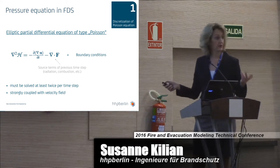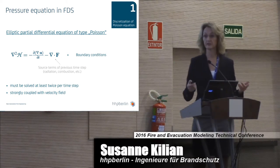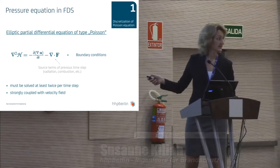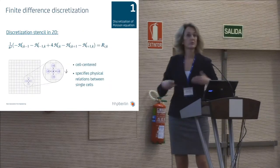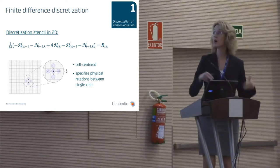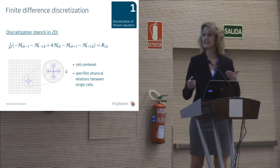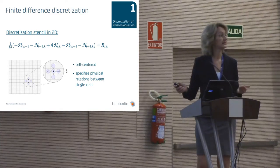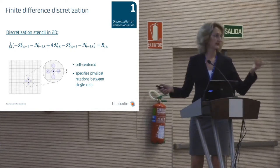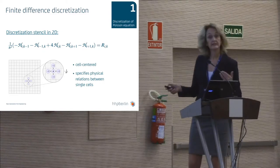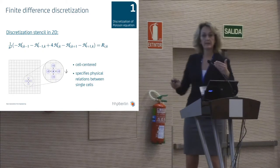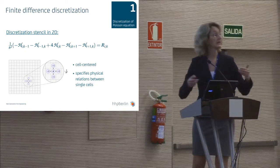Here you see a big right-hand side term which contains a lot of different components from the previous time step, and here is the coupling with the velocity field. We must get the information of this mathematical equation onto our numerical grid. To this end we use a finite difference discretization in FDS, illustrated here for the 2D case. This discretization is based on the use of a matrix stencil which specifies the physical relations between the single grid cells.